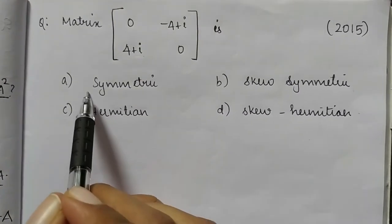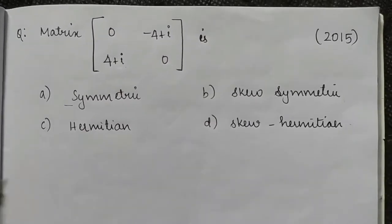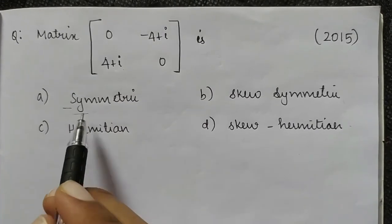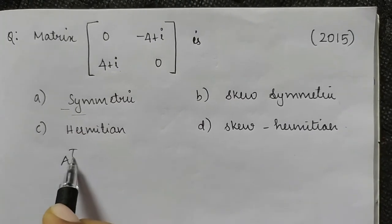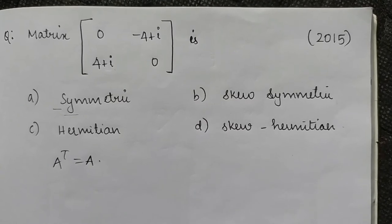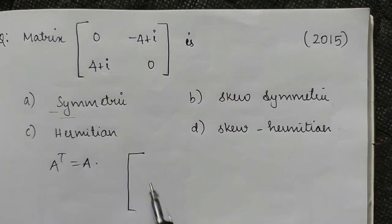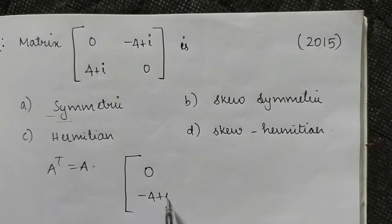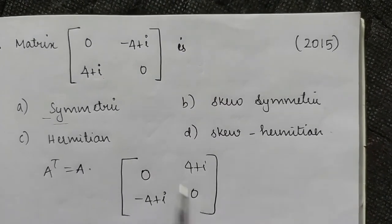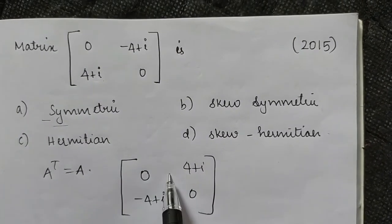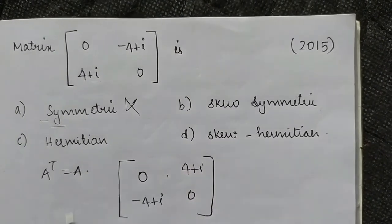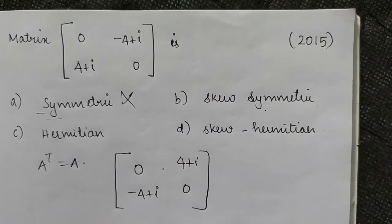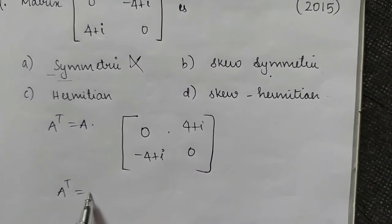We will check each option. For symmetric, A transpose equals A. Transposing — interchanging rows and columns — gives us 0, 4i, 4i. These two are not the same, so it is not symmetric.